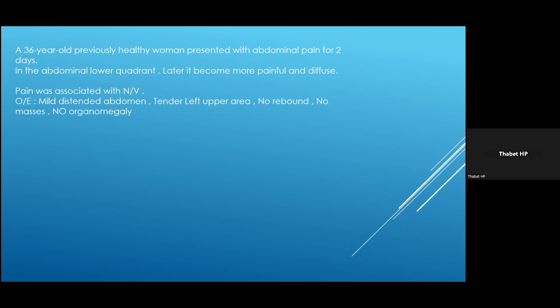The pain was in the lower abdomen. She wasn't clear about whether it was on the right or left, but the pain was increasing in severity with time and becoming more diffuse. The pain was also associated with nausea and vomiting. On examination, there was a mildly distended abdomen, tender in the lower abdomen mainly on the left side, with no rebound, no palpable masses, and no organomegaly.